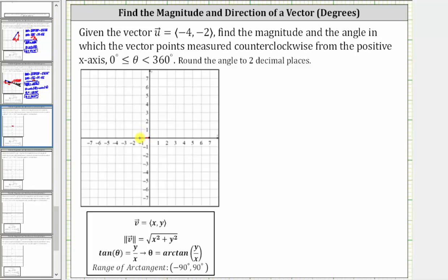we would move left four units, and because the y-component is negative two, we then move down two units to determine the terminal point